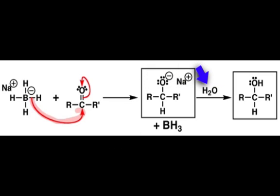After treatment with water to neutralize the alkoxide, the product that results is an alcohol in which we've added a hydrogen to the former carbonyl carbon. Formally, this is a reduction transformation because we've transformed the carbon-oxygen multiple bond into two sigma bonds to hydrogens.